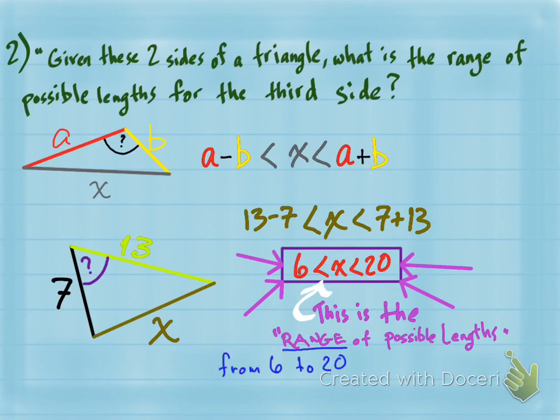The range of possible lengths for that third side is anything from six to 20. That's enough about the triangle inequality theorem. Thank you very much for watching. I hope you're having a good day, and I hope to see you soon. Bye-bye.